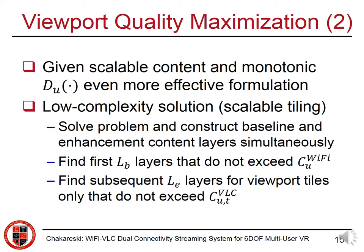We can solve the problem of rate allocation and construct the baseline and the content layer simultaneously. The solution comprises finding the first LB layers of a scalable tiling that do not exceed the capacity of the Wi-Fi link associated to a user's viewpoint, and similarly finding the subset of LB layers only for the viewport tiles of that user that do not exceed the capacity of the VLC link assigned to the user.